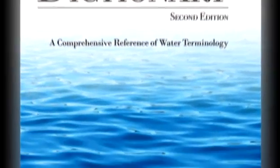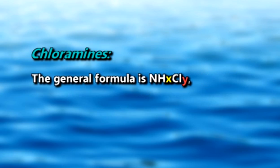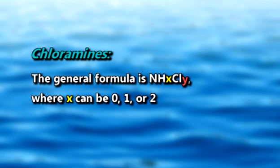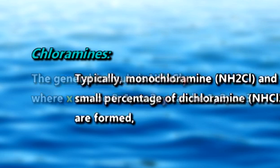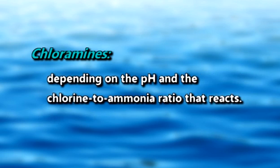The AWWA Water Dictionary defines chloramines as disinfectants produced from the mixing of chlorine and ammonia. The general formula is NH_X CL_Y, where X can be 0, 1, or 2, and Y can be 1, 2, or 3. Typically, monochloramine and a small percentage of dichloramine are formed depending on the pH and the chlorine to ammonia ratio. The intended result is to produce monochloramine.